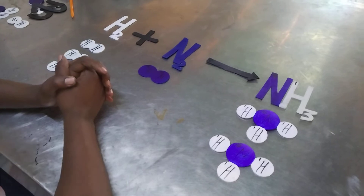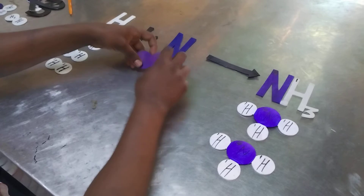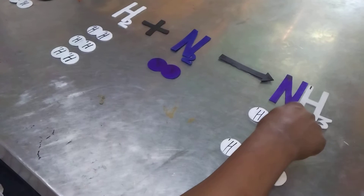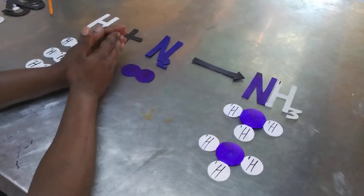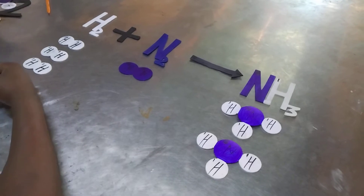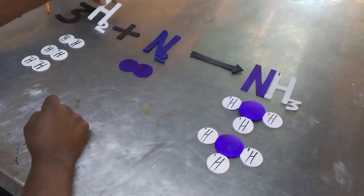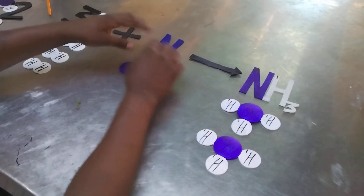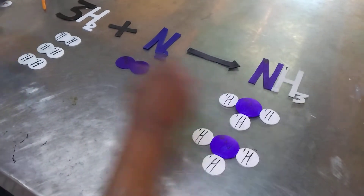Now let us concentrate on nitrogen. On this side we have a molecule of nitrogen which is two atoms of nitrogen, and on the product side we now have one and two — so we have two nitrogen atoms on each side. Nitrogen is also balanced. We can now put in our coefficients: counting the molecules, we have three molecules of hydrogen, one molecule of nitrogen, and two molecules of ammonia.